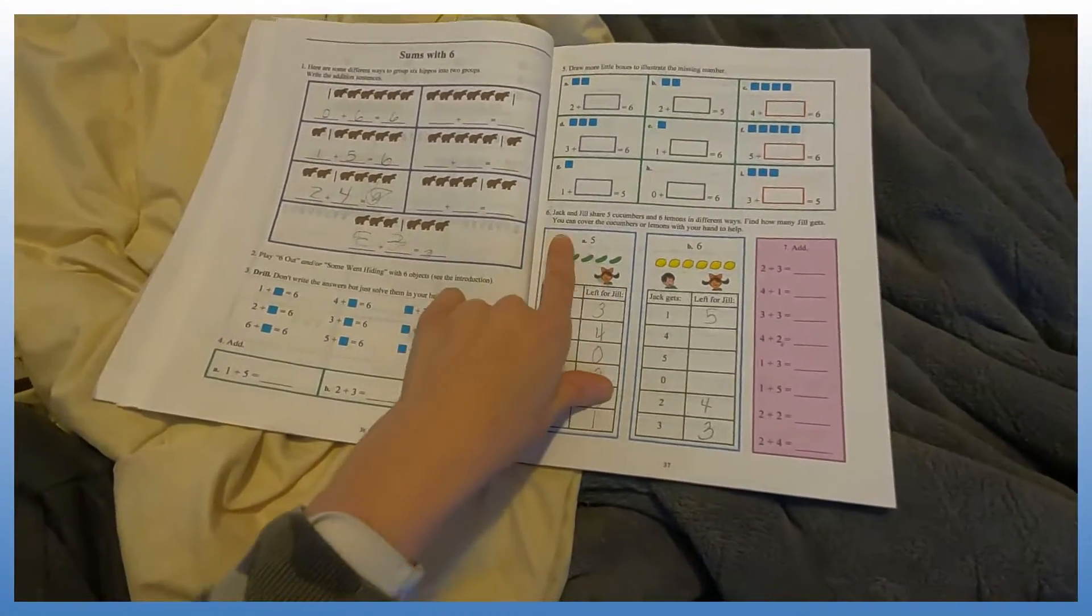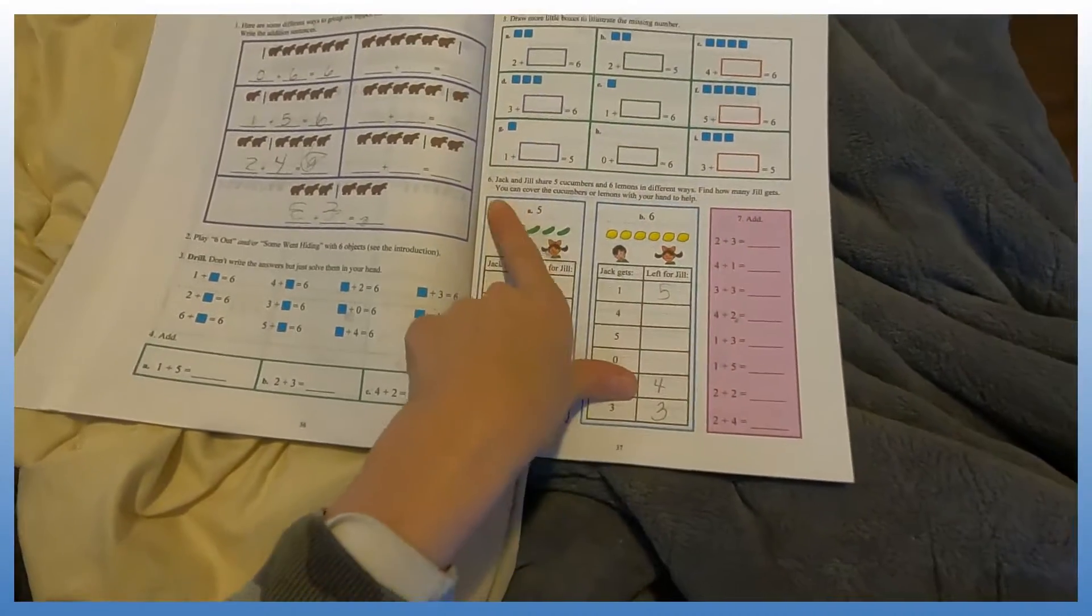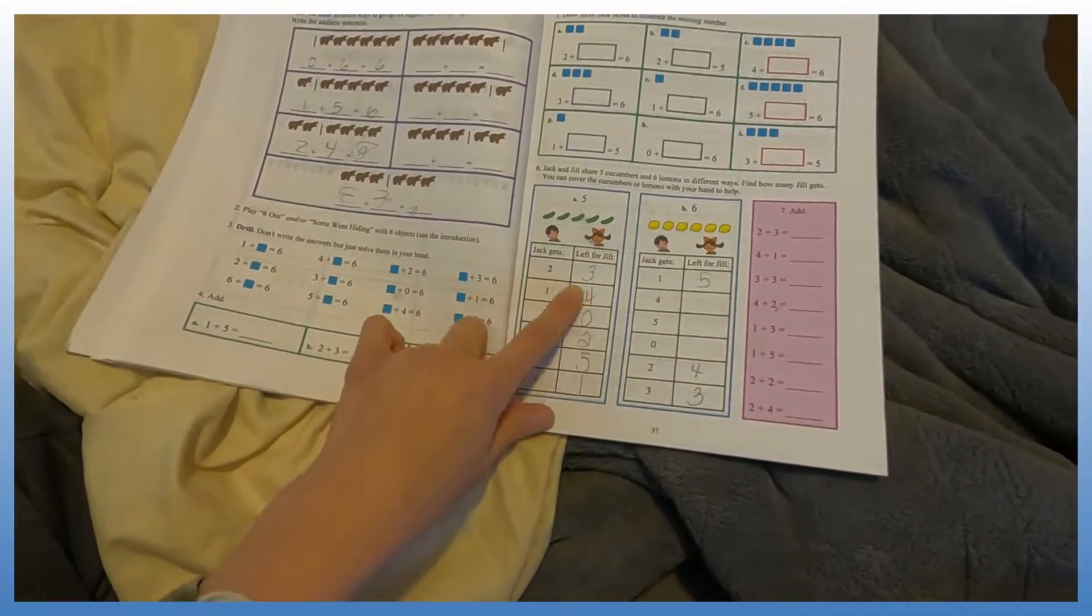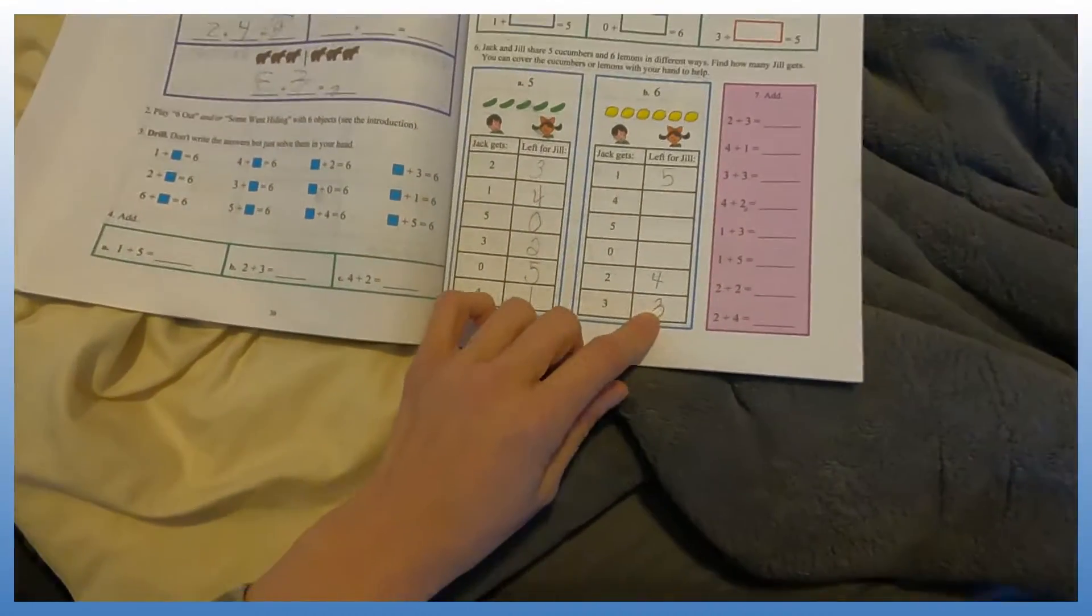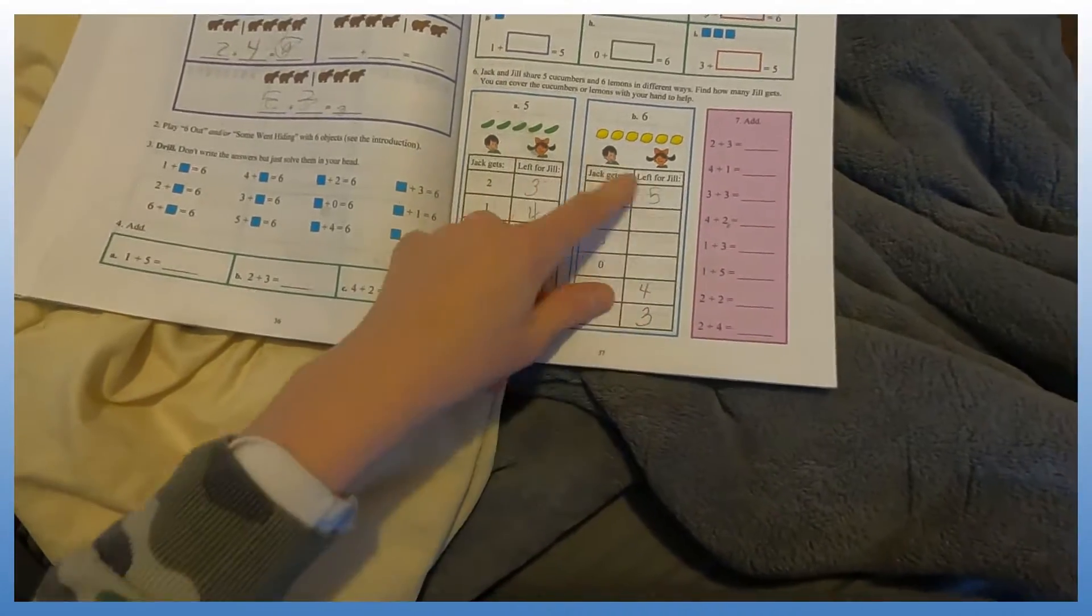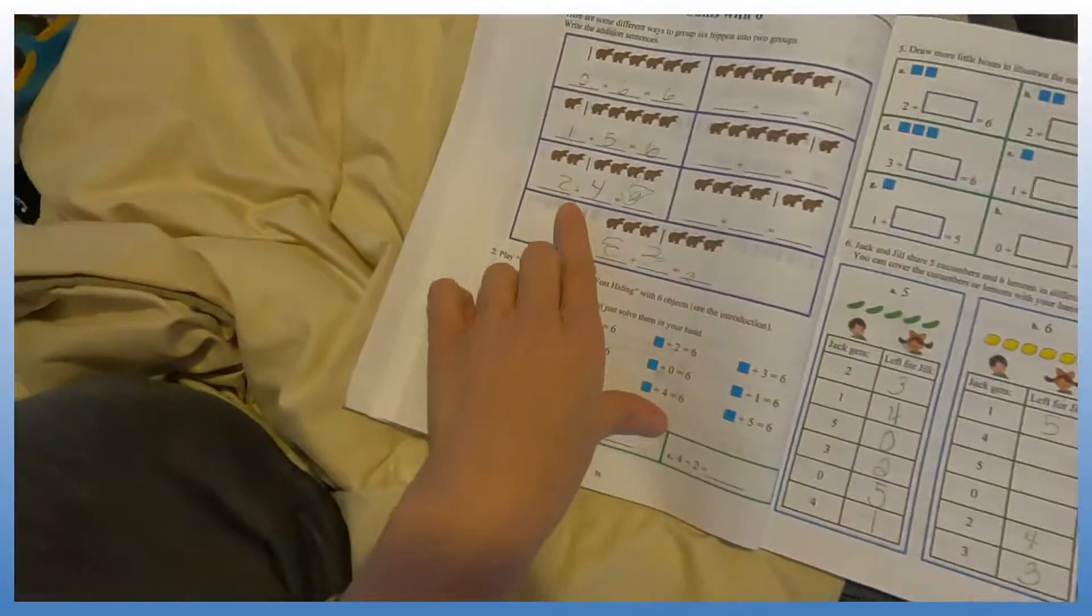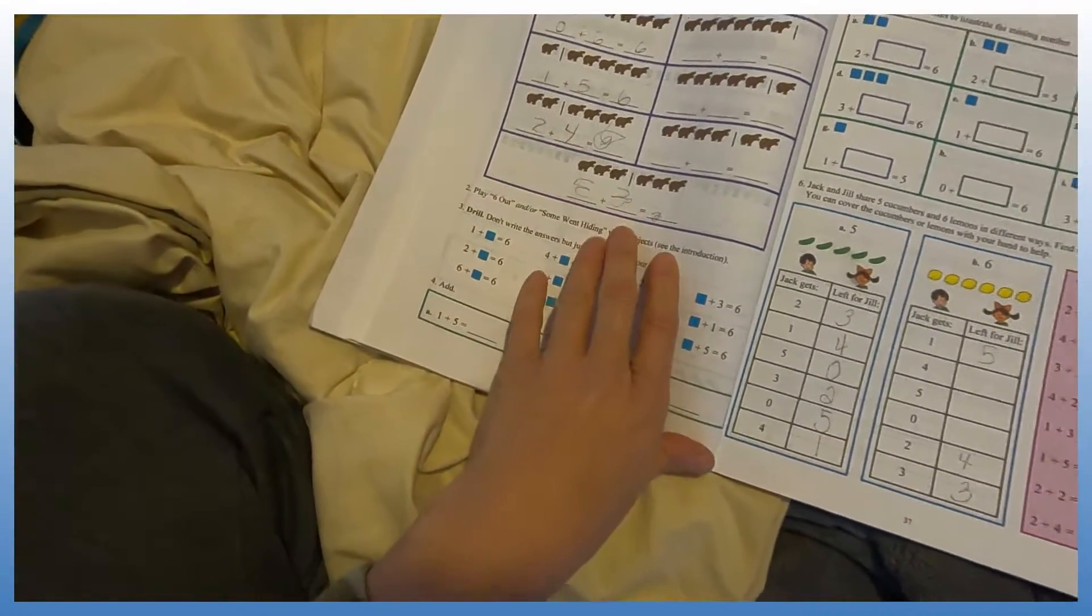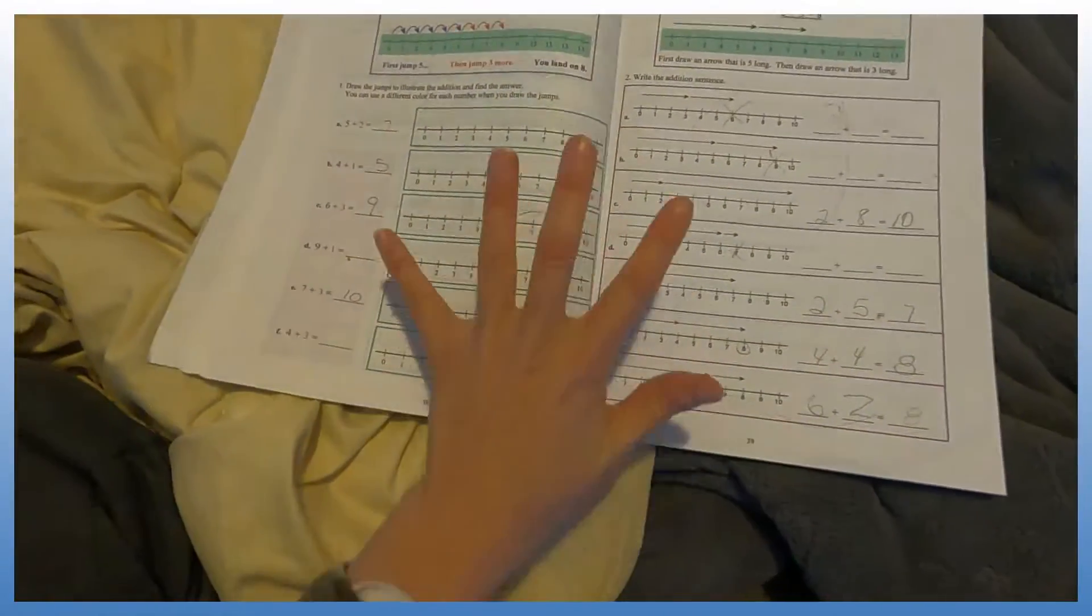For example, sometimes I make him do the whole thing, like Jack and Jill share five cucumbers and six lemons in different ways, find out how many Jill gets. If Jack gets two, what's left for Jill? Jack gets one, what's left for Jill? And then see how I only have a couple figured out here because I'm like, all right, just choose two. And then he can just tell me the answers. As long as I know he knows it.